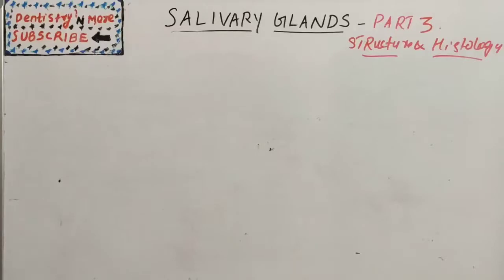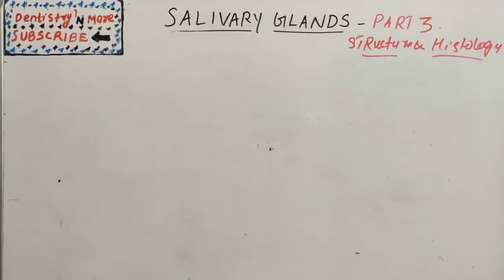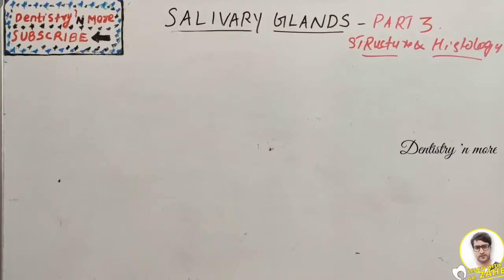Hello everyone, welcome back to another session in Dentistry and More. We're continuing our salivary gland session. This session is about histology — basically the types of cells: acinar units, we have serous cells, mucus cells, and myo-epithelial cells. Then the ductal system: intercalated ducts, striated ducts, and terminal ducts.